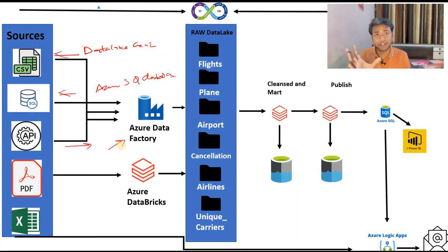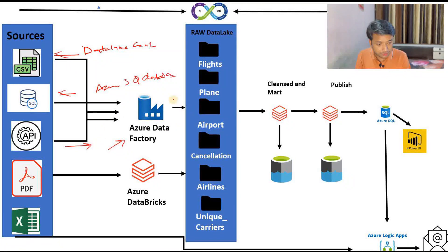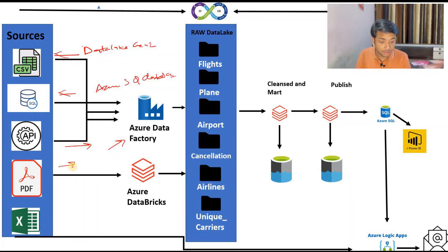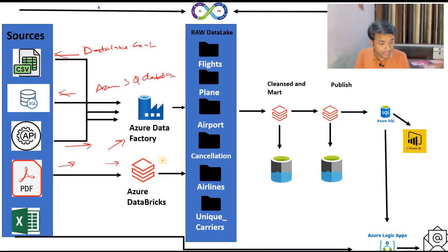Azure Data Factory is kind of an ideal tool with the help of which we source the data. After sourcing all these data, we will be putting it into the raw data lake - meaning Azure Data Lake Gen2. Apart from this, we have some PDF files which we will source with the help of a Python script using Azure Databricks. We will be saving the PDF files also in Azure Data Lake Gen2 in Delta format - the file format should be Delta only.